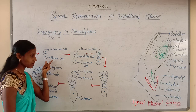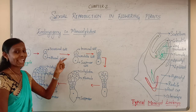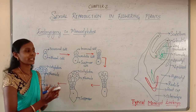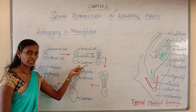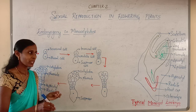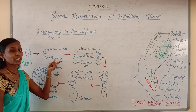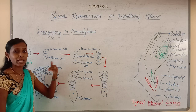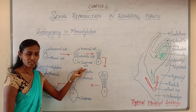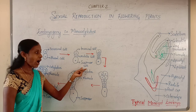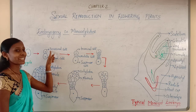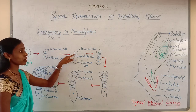The basal cell, which is towards the micropylar region, will enlarge and become swollen. It is called the suspensor cell, and it can act like a haustorium — just as I mentioned in the previous class. This terminal cell will then divide transversely one more time, resulting in the formation of two cells.